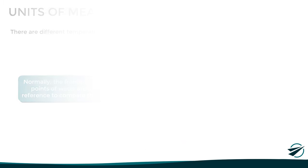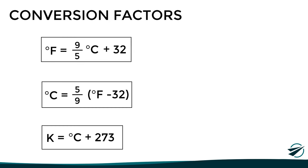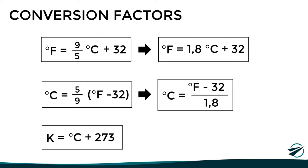Here we can see the most commonly used conversion factors between these units. The relationship between Kelvin and Celsius is quite simple, as they have a direct relation with a difference of 273 units. The conversion from Fahrenheit to Celsius and vice versa is a bit more complex, as it involves fractions. However, we can also use a factor of 1.8 with these other formulas if it is more convenient.